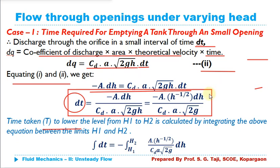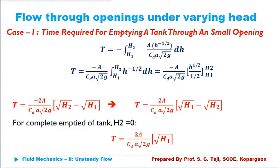To compute the total time required to decrease the water level from H1 to H2, we integrate this equation between limits H1 and H2. Integrating both sides: T = -∫(H1 to H2) [A × H^(-1/2) / (CD × a × √(2g))] dH.